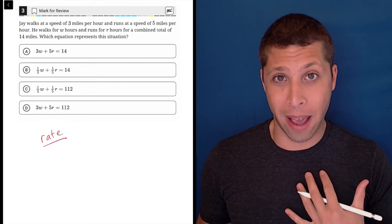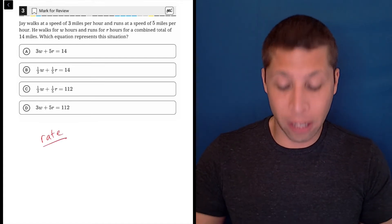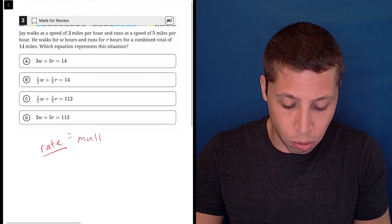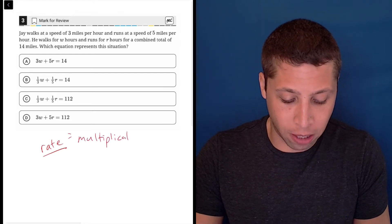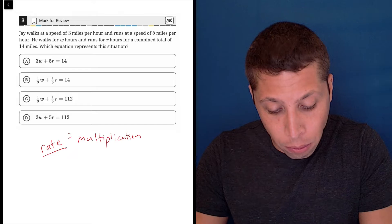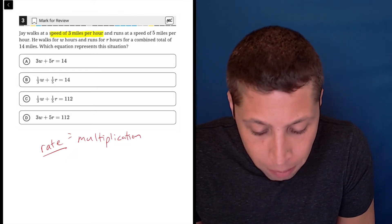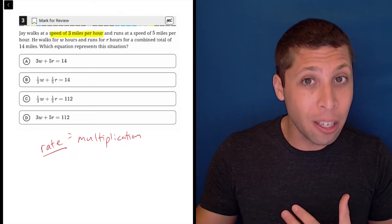We see rates all the time in math, and when we see them, it usually means that we are going to use multiplication. So just to kind of focus in on some things here, Jay walks at a speed of three miles per hour. That's a rate. There's a lot of keywords there.